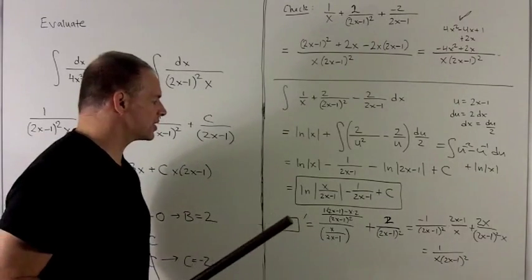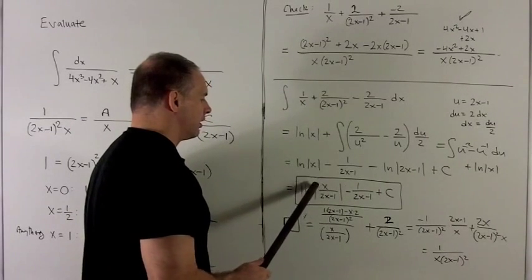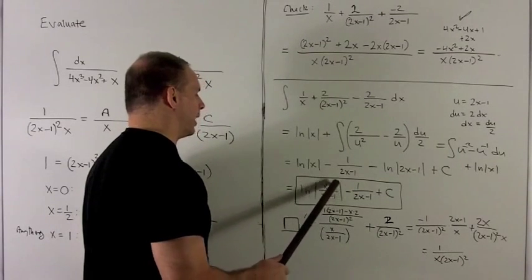Of course, we should check this. Okay, this will be a little messy. Derivative of natural log of box is just going to be you put box in the bottom, and then take the derivative of what's inside the box.